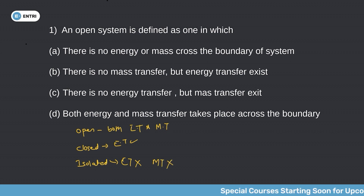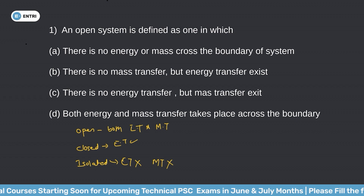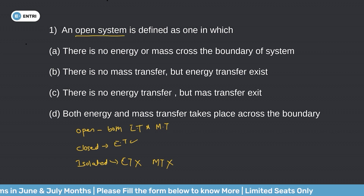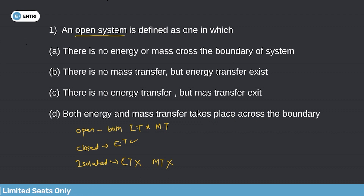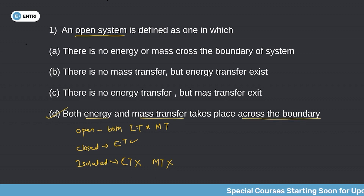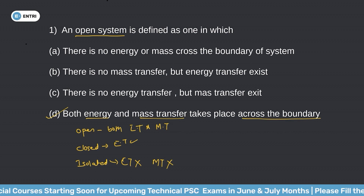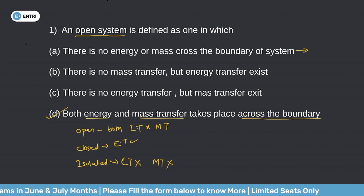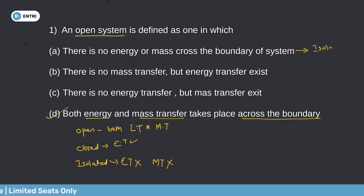An isolated system is one which neither permits energy transfer nor permits mass transfer. Systems that satisfy this condition are called isolated systems. This is the definition of the isolated system. So for question 1, option D — both energy and mass transfer takes place — corresponds to the open system definition, making option D the correct answer.